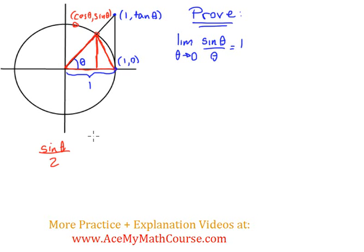Why is that? Because the base is 1. So base times height — the height is sin(θ) — divided by 2 gives the area of the triangle.